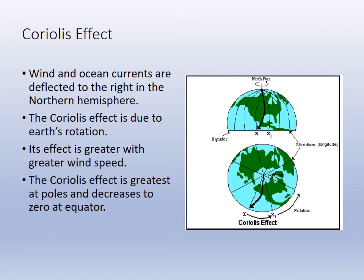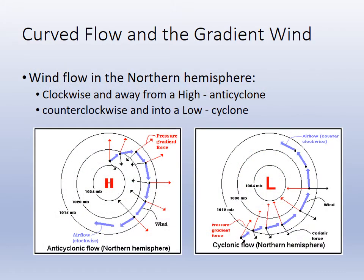The Coriolis effect affects wind much like the ocean currents, where it travels toward the right in the northern hemisphere. This leads to anticyclonic or cyclonic flow depending on the pressure system. High pressure gets anticyclonic flow, which is clockwise around the system. Low pressure gets cyclonic flow, which is counterclockwise. Hurricanes and storms move counterclockwise around the low pressure system.